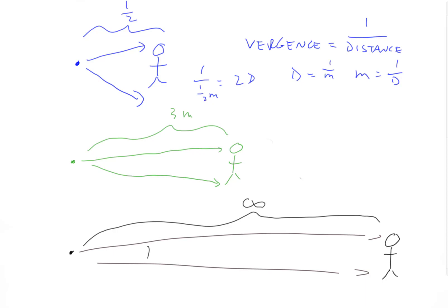What about the green guy? Vergence equals one over distance. Diopters equals one over meters. So one over three meters equals one-third of a diopter.